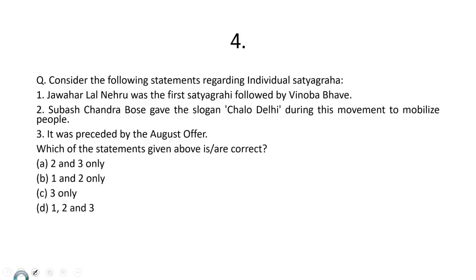Question No. 4. Consider the following statements regarding individual Satyagraha. When British made India part of the Second World War without consulting the Indians, the Indian National Congress at that point in time sought it fit that we should protest India being dragged to the Second World War. And for that, individual Satyagraha was launched. The first individual Satyagraha was Gandhian Vinoba Bhave. The second one was Jawaharlal Nehru. So first statement is wrong. Subhas Chandra Bose gave the slogan Chalo Dilli during this movement to mobilize people. This statement is wrong because this slogan was given in 1944 during the March of Indian National Army. It was preceded by the August offer of 1940. Correct? So only 3. C is the correct answer.